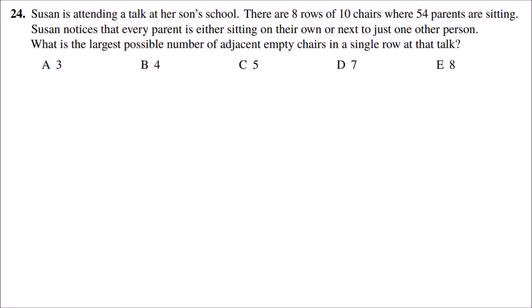Hello, today I'm going to be explaining question 24 from the UKMT Junior Math Challenge 2020. First of all, because each parent is sitting next to a maximum of one other person, then the maximum number of parents sitting next to each other is two.